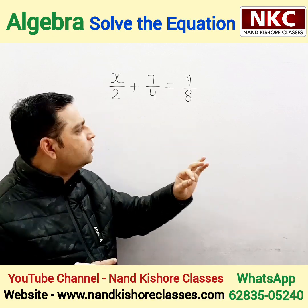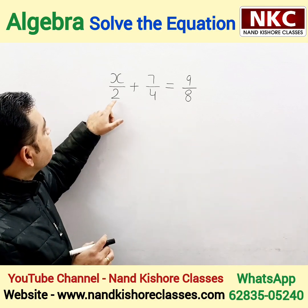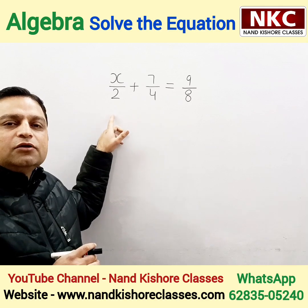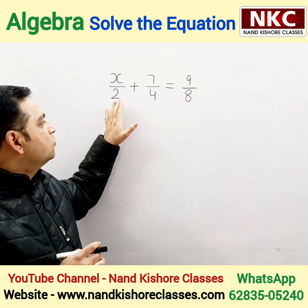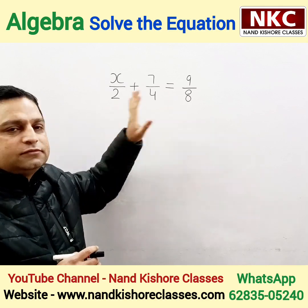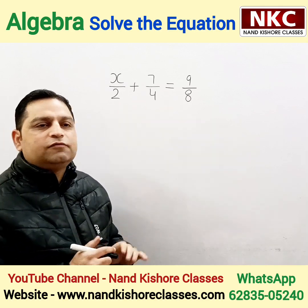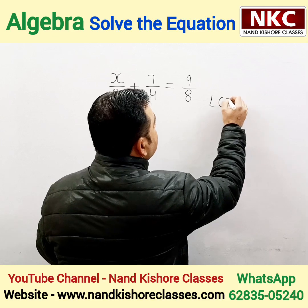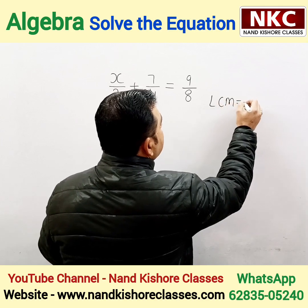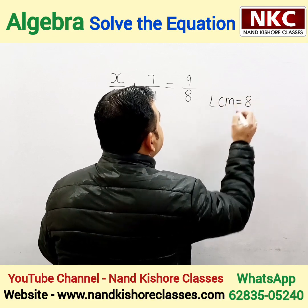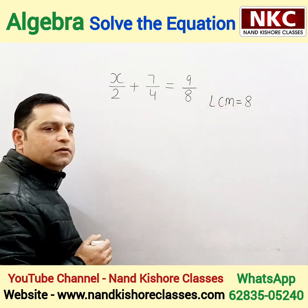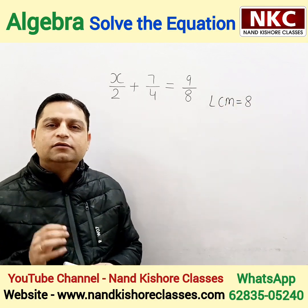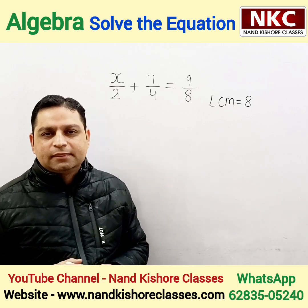What you need to do is just take the LCM of each and every number in the denominator — like 2, 4, and 8. Find the LCM of these three numbers; the LCM here will be 8.